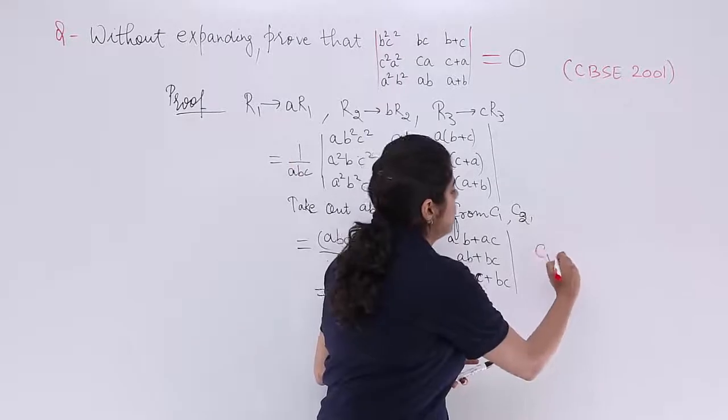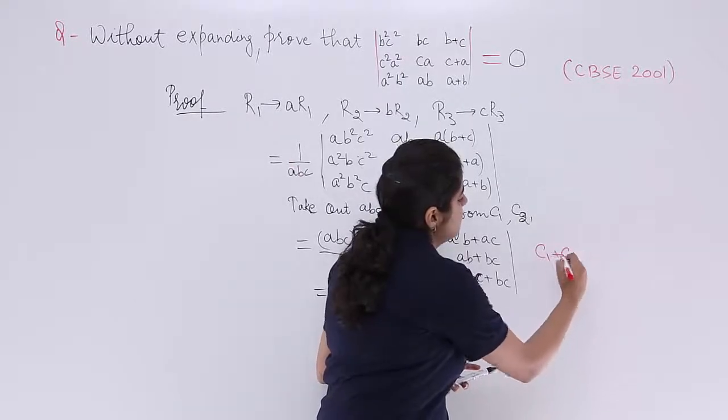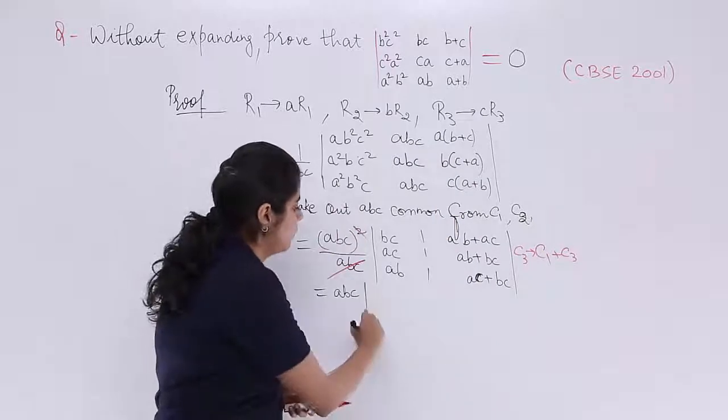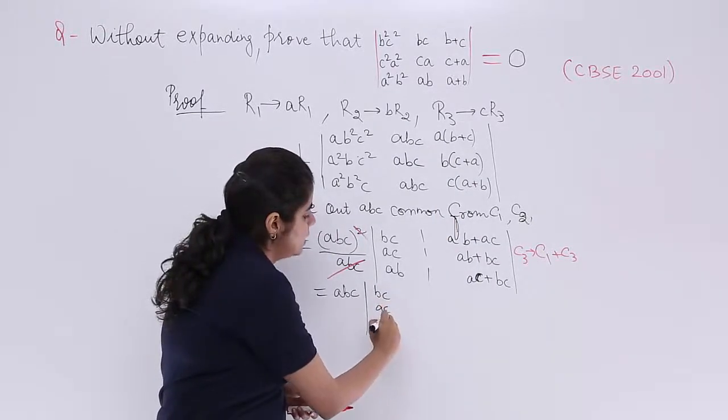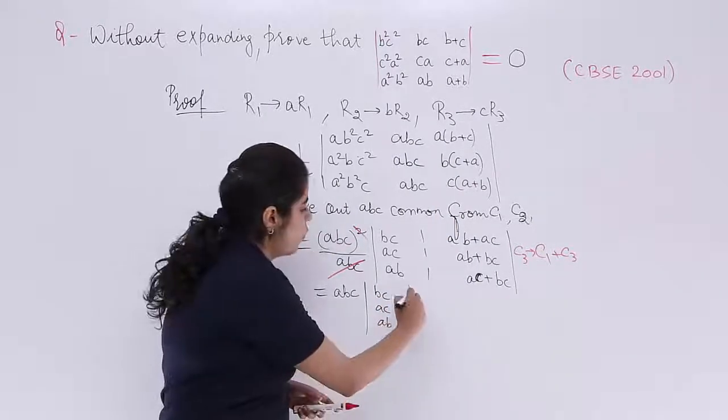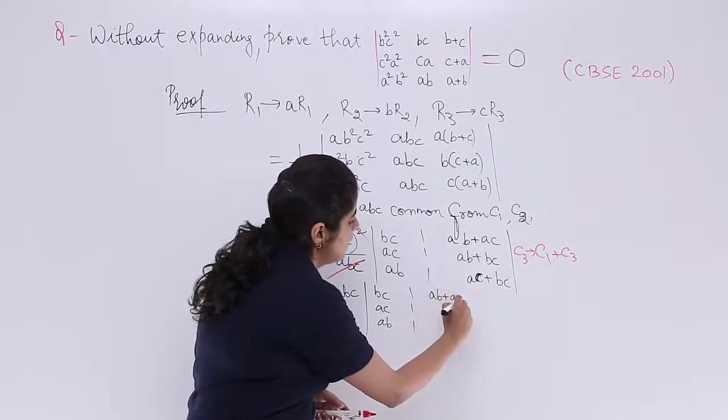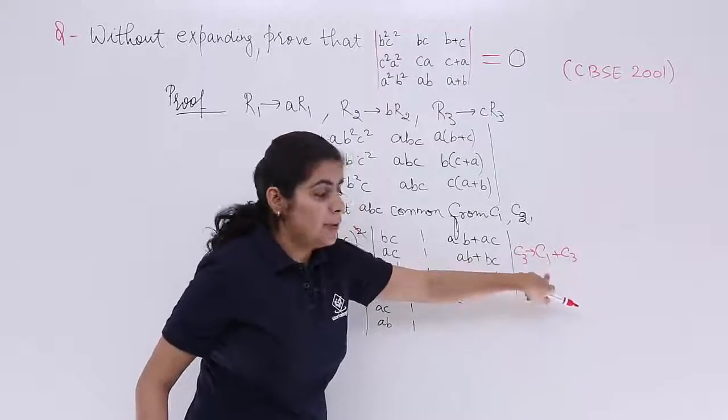So I write apply C1 plus C3 wherein in C3. So what happens, let's see, BC, AC, AB as it is, 111 as it is, AB plus AC, this is C3 plus C1.